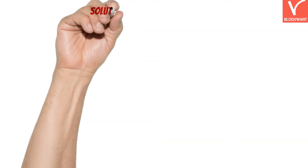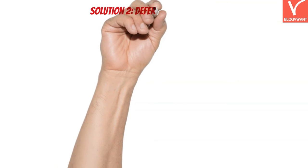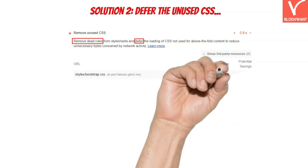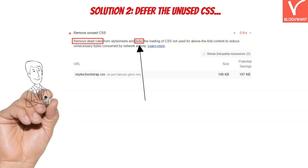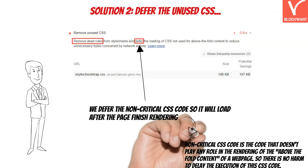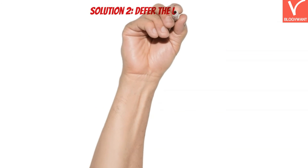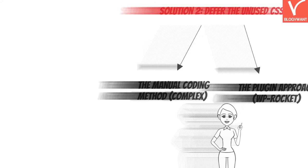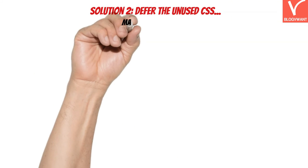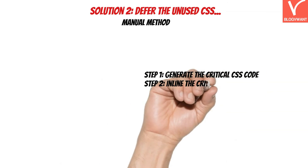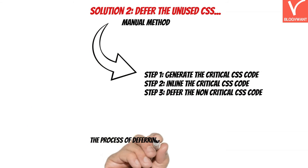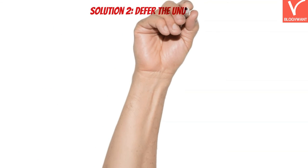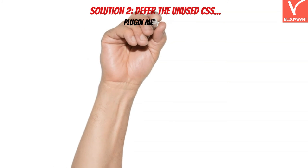The next solution suggested by Google PageSpeed is to defer the unused CSS. In this approach, we don't actually remove the unused CSS code — instead, we defer non-critical CSS so it loads after the page finishes rendering. That's why the chances of website design crashes are lower with this method. Deferring non-critical CSS can be done either via manual coding or with a plugin. The manual method involves three main steps and is complex — only attempt it if you have good knowledge of the website backend. Users who don't want to deal with coding can use WP Rocket to defer non-critical CSS easily.